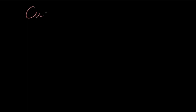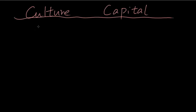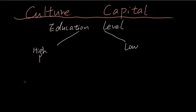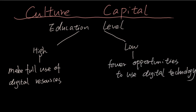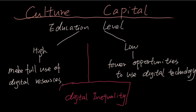Moreover, the cultural aspect: personal knowledge and ability affects the composition of digital literacy. This means people with more knowledge reserves can make full use of surrounding digital resources to get timely and accurate information. So different education levels also cause digital inequality in our daily life.